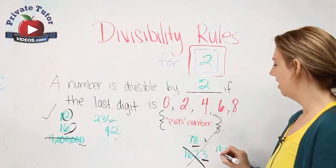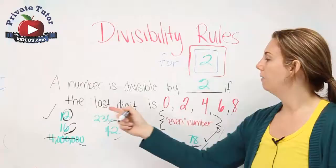A number is divisible by 2 if the last digit is 0, 2, 4, 6, or 8. Or an easier way to remember is if it's an even number. Divisible by 2.